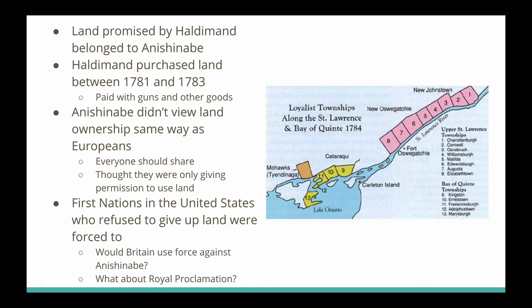The Anishinaabe didn't view land ownership the same way as Europeans. They believed everybody should share the land. They saw the guns and goods as a gift for permission to use the land — not a sale. Some argue they didn't know they were selling it. Others say they did sell, worried about what would happen to them like First Nations in the United States, where refusing to give up land meant being forced off it. The Anishinaabe in British North America feared the British might use force similarly, and wondered about the Royal Proclamation that had promised them the Ohio Valley.